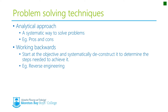Next, we have working backwards. That's where you start with the objective and systematically deconstruct it to determine the steps needed to achieve it. For example, you might say: I want to get a particular grade — what steps do I need to take to achieve that grade? Or you want to purchase a car that costs $10,000 — what steps do I need to take to save that money? Another classic example is reverse engineering in engineering, where you find a design, pull it to pieces, and work out what you need to do to actually recreate that design.